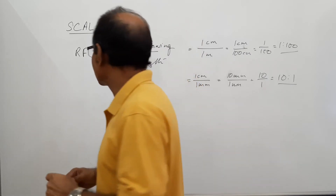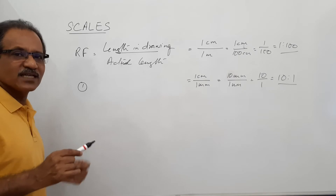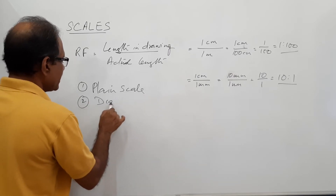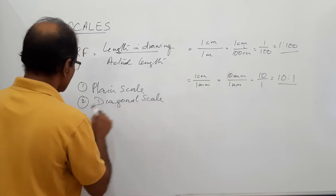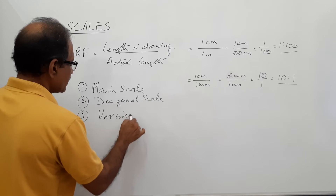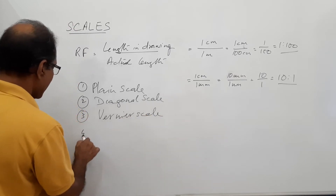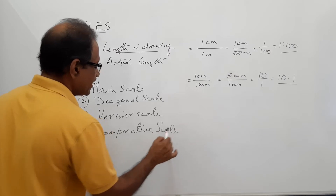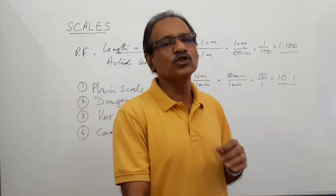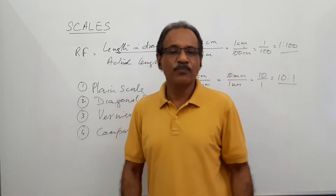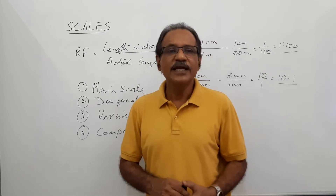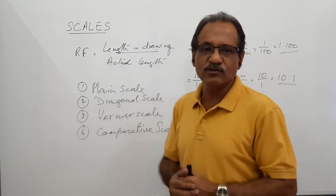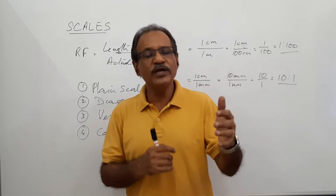In this chapter on scales, there are four most important types: plane scale, diagonal scale, vernier scale, and comparative scale — and also scale of chords. These are the most important ones to learn from this subject's point of view. In the subsequent videos we will cover plain scales, diagonal scales, vernier scales, and comparative scales as four separate videos, doing problems in each.